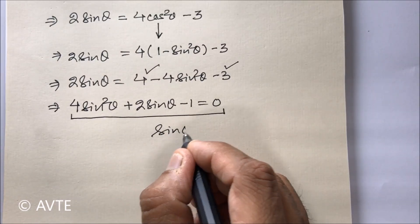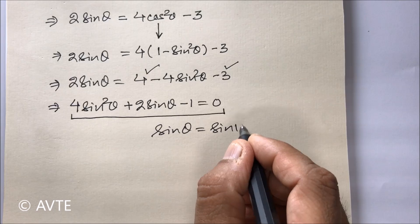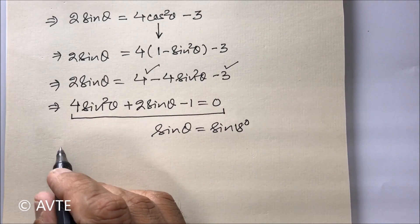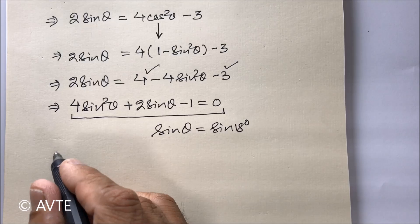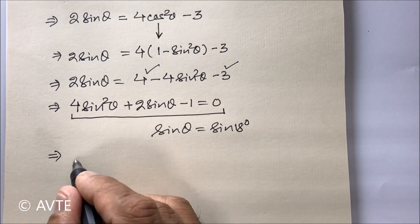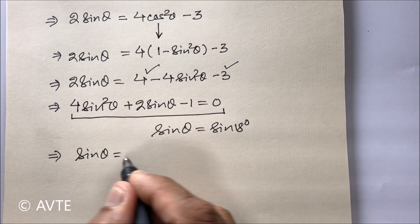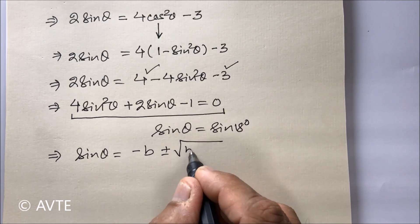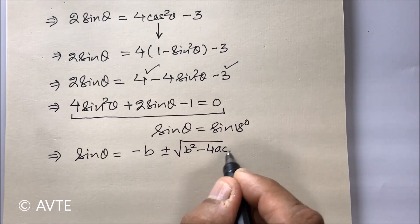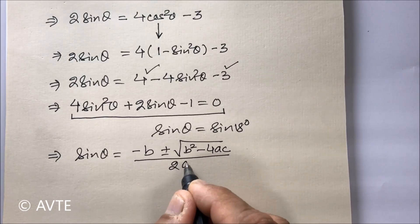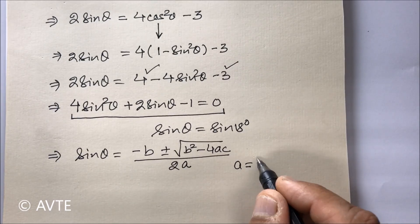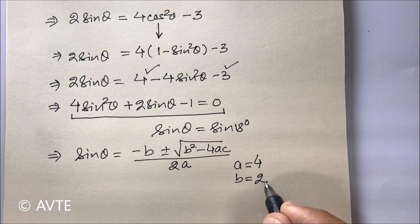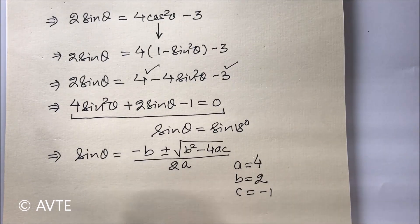Remember that sine theta is actually sine 18 degrees. We now use the discriminant method to find the value of sine theta. Here a equals 4, b equals 2, and c equals minus 1.